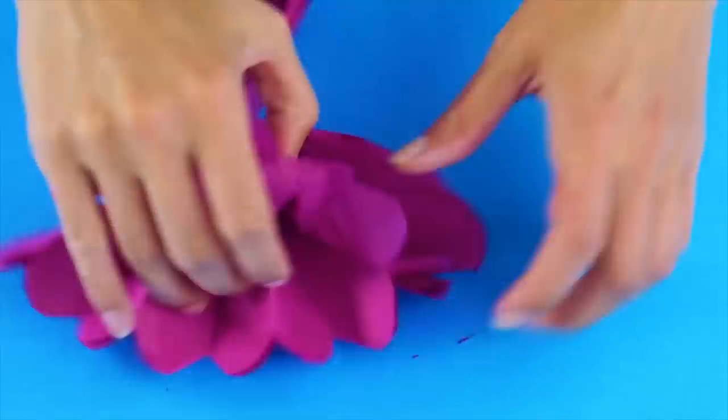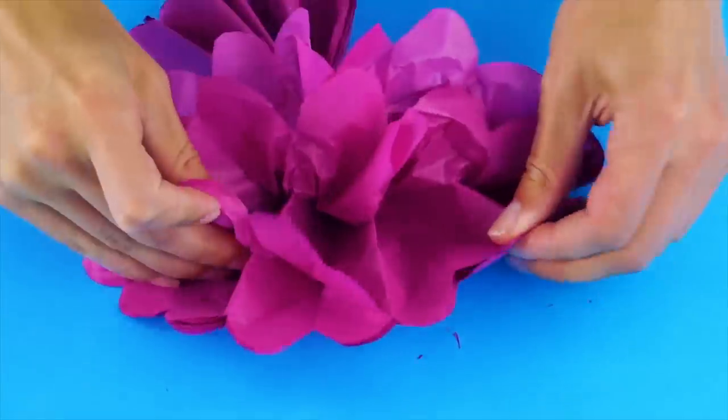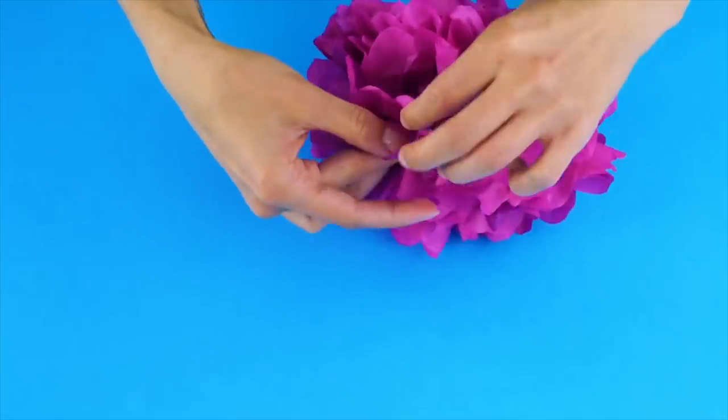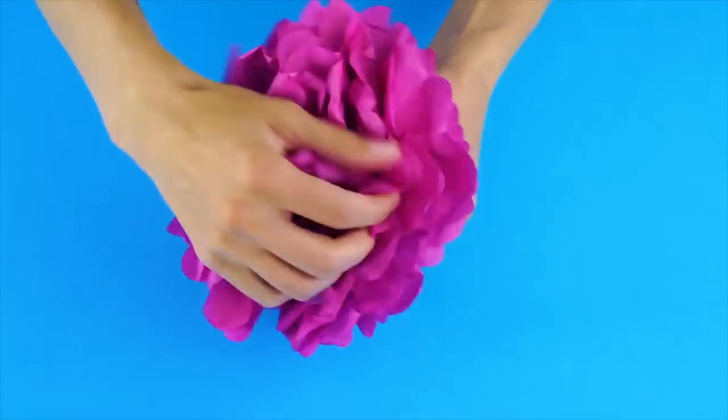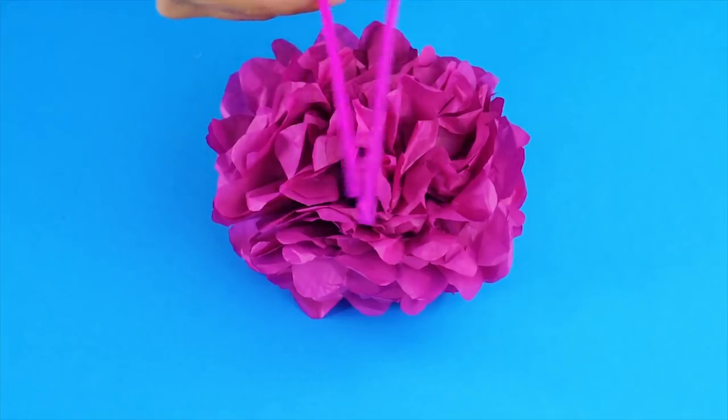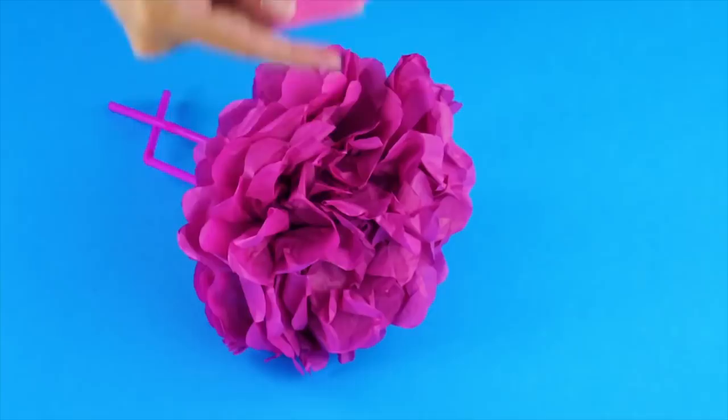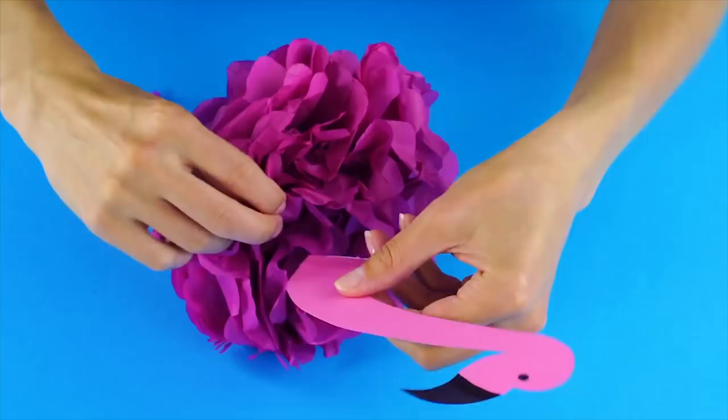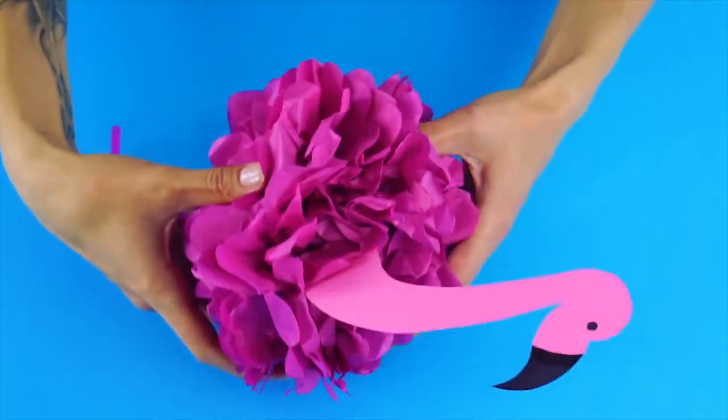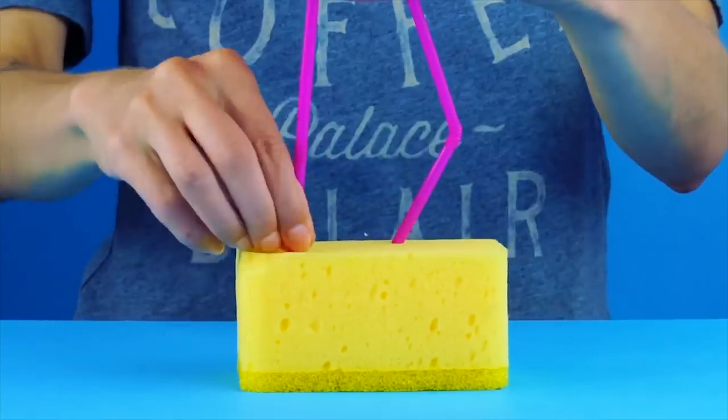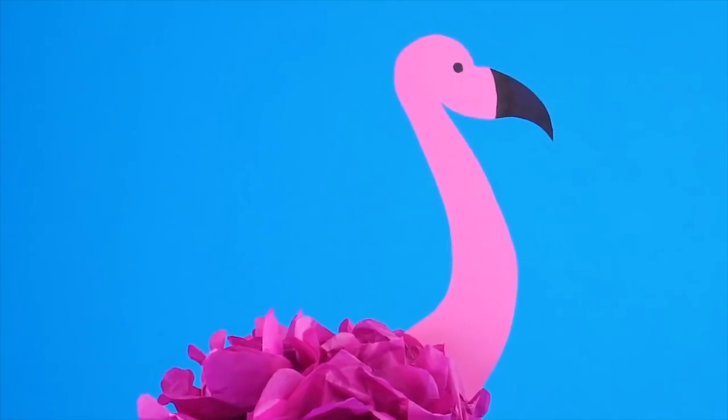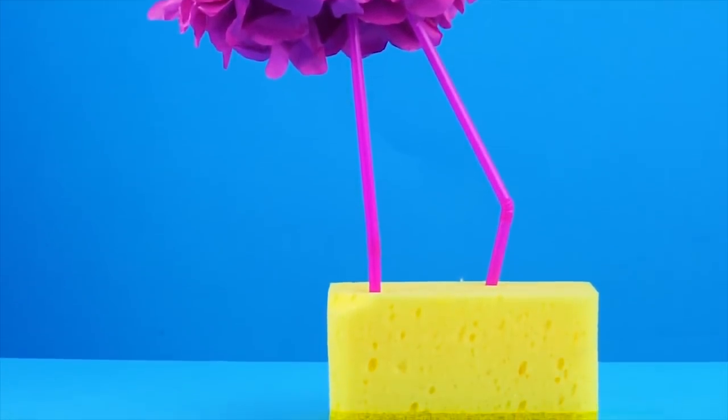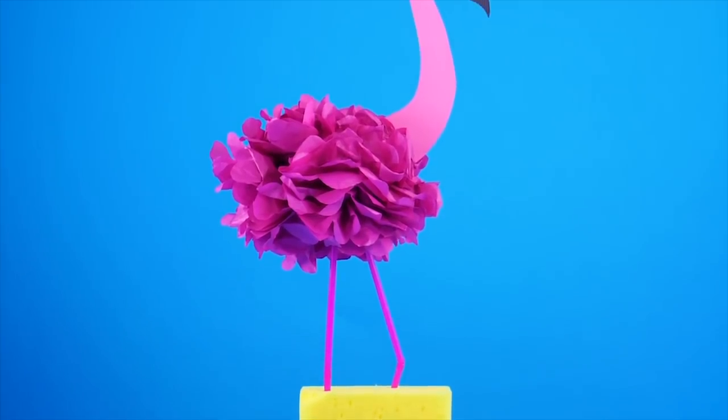Stick in some bendy straws for legs and glue in a paper flamingo head. Look at this cute flamingo. You can even cut slits in a kitchen sponge to make a stand for your new friend. Adorable!